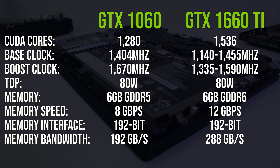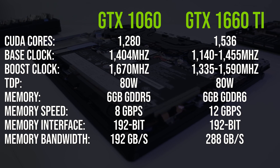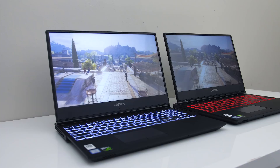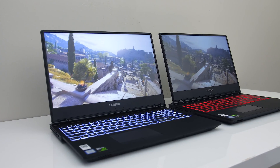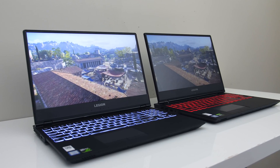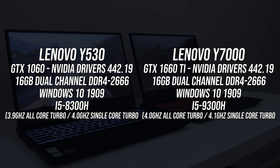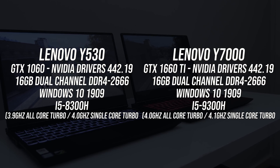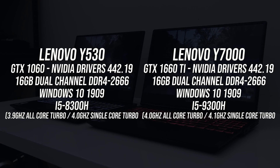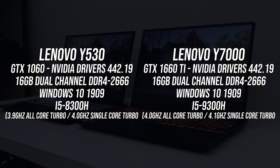Starting with the specs, the newest 1660 Ti has 20% more CUDA cores, and although both have 6GB of memory, the 1660 Ti uses faster GDDR6. The laptops I'm testing with are my Lenovo Y530 with GTX 1060 and Lenovo Y7000 with GTX 1660 Ti. The chassis of both are basically the same, so thermals should be comparable. The 1660 Ti machine is paired with the newer 9th gen i5 processor, however the difference is extremely minor — just 100MHz best case. As the 16 series graphics came out after the 9th gen launched, there are likely no 8th gen laptops with the 1660 Ti anyway, so this is probably as apples to apples as we can get.